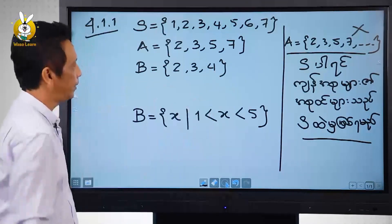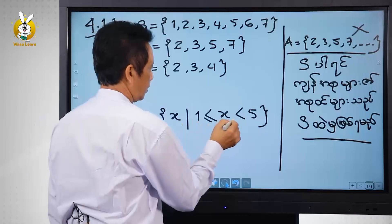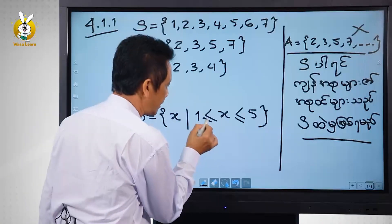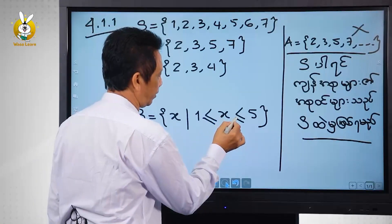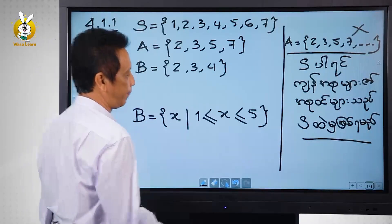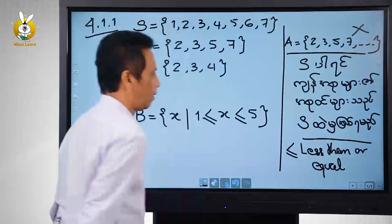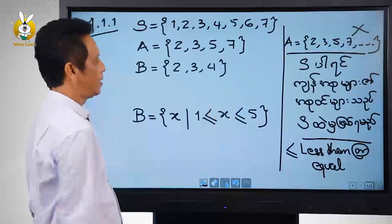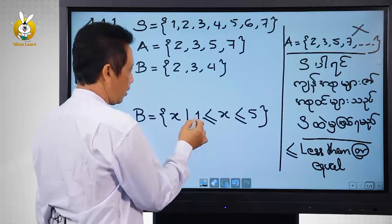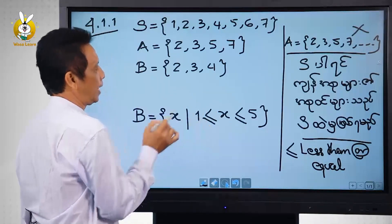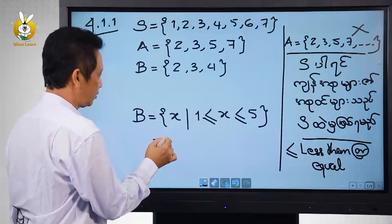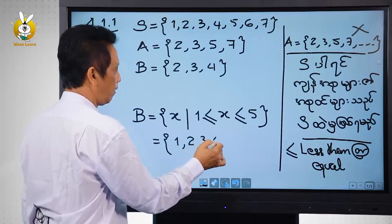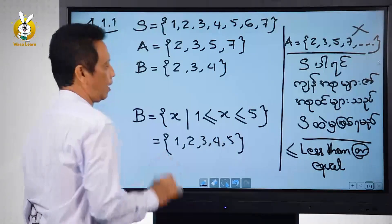How do you think this is? Let's take a look at this one. Less than or equal to zero. Less than or equal to zero. More than or equal to zero. You can see the same thing — this one is going to be done. One, two, three, four, five.